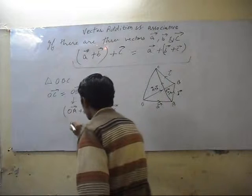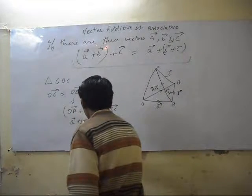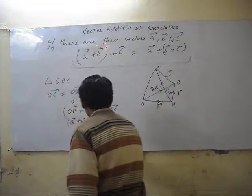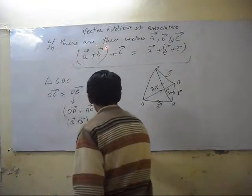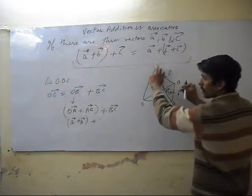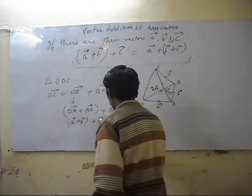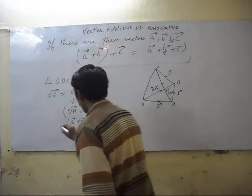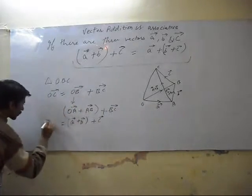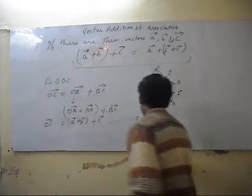So this is A vector plus B vector plus BC vector's value is OC vector. This is OB vector. This is B vector.